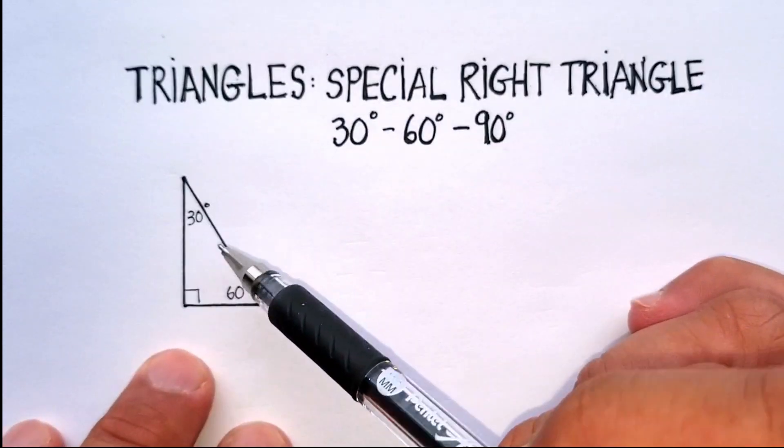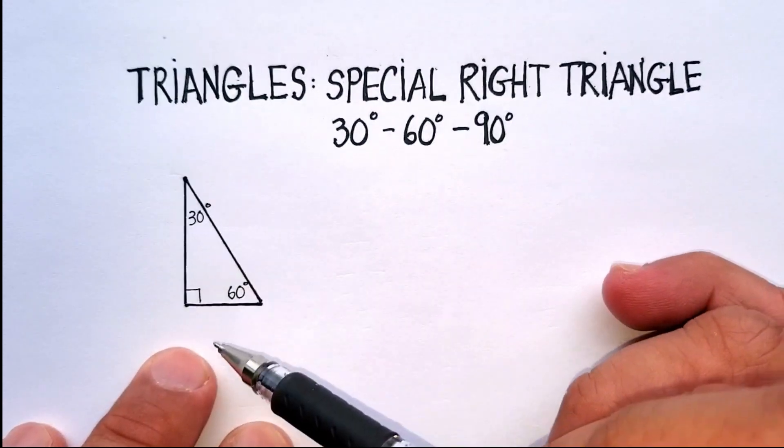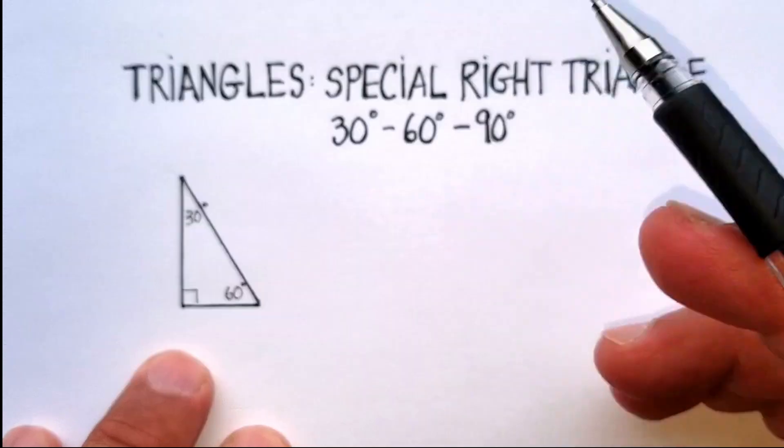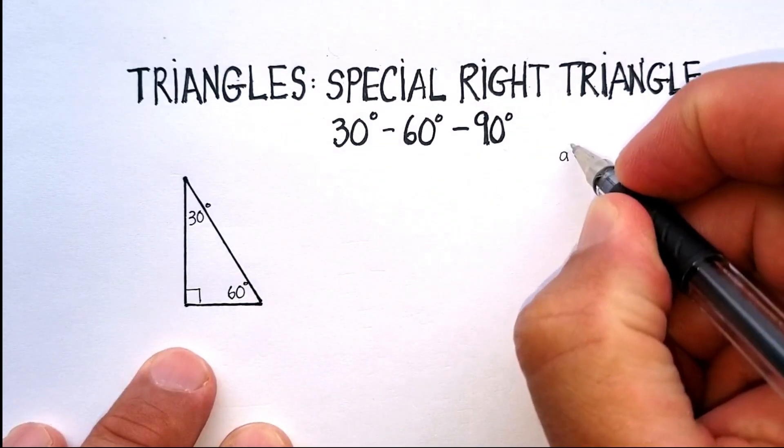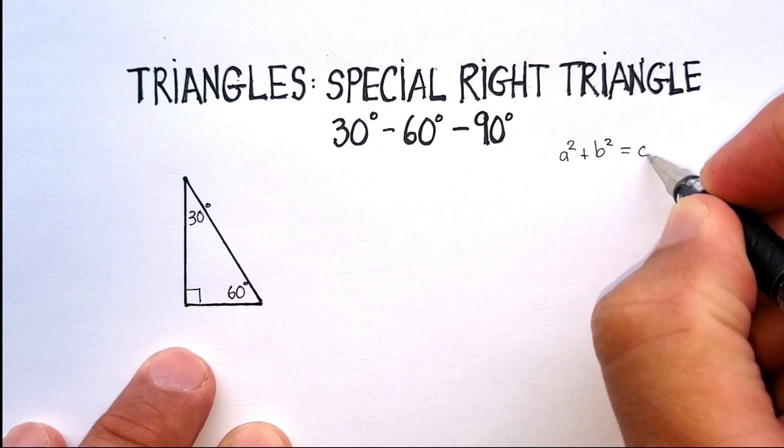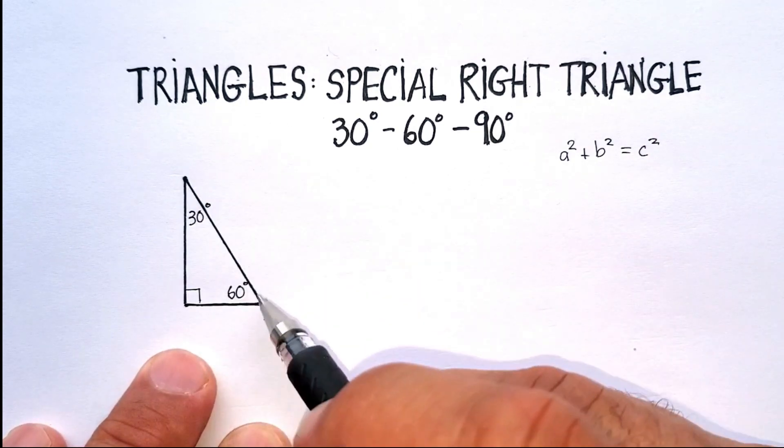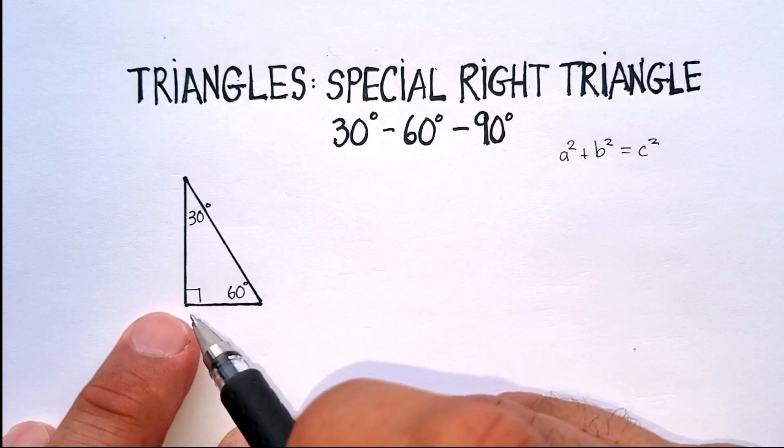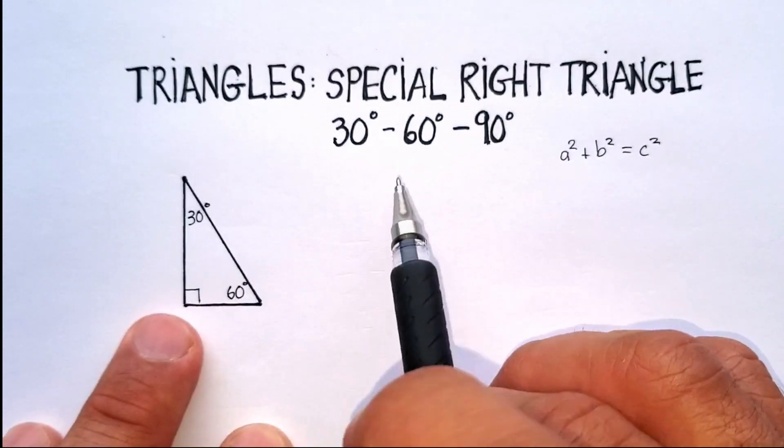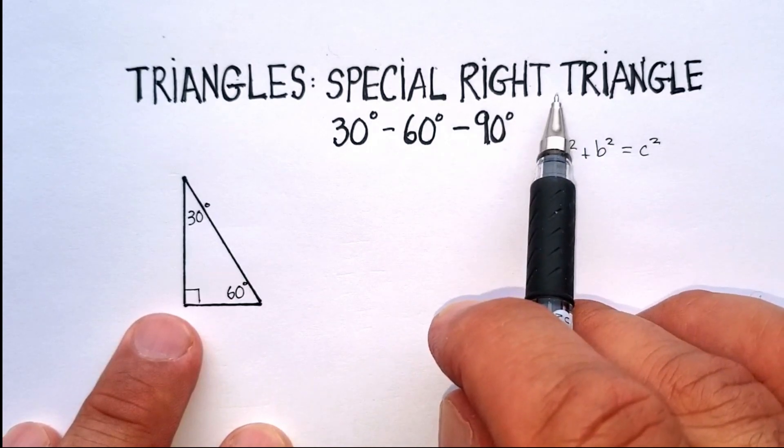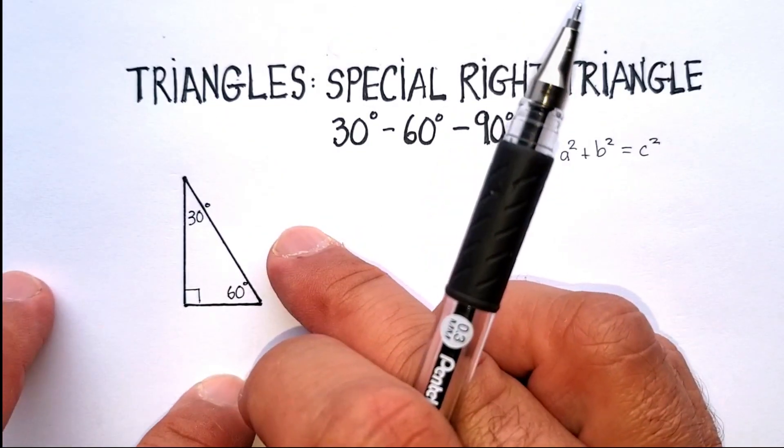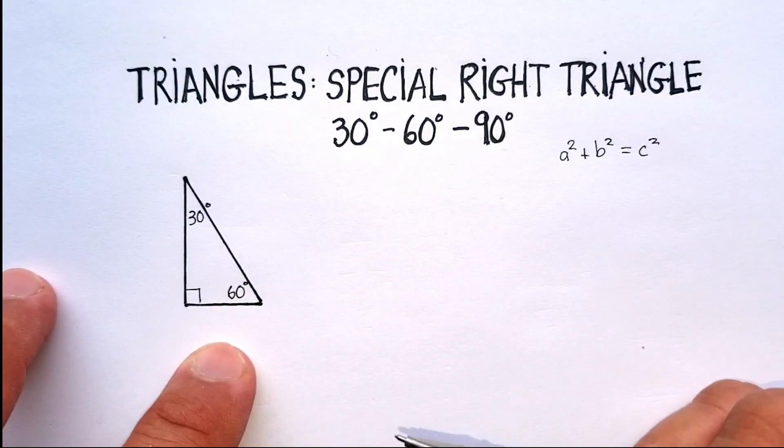Now, you can always use a Pythagorean theorem to figure out the sides of any right triangle, right? So we know that a squared plus b squared will always equal c squared. And remember, the c is always the hypotenuse of the triangle, the side that's opposite the 90-degree angle. But the nice thing about special right triangles is that they have a formula that you can follow, so you really don't even have to use a lot of math to figure out what the lengths are.